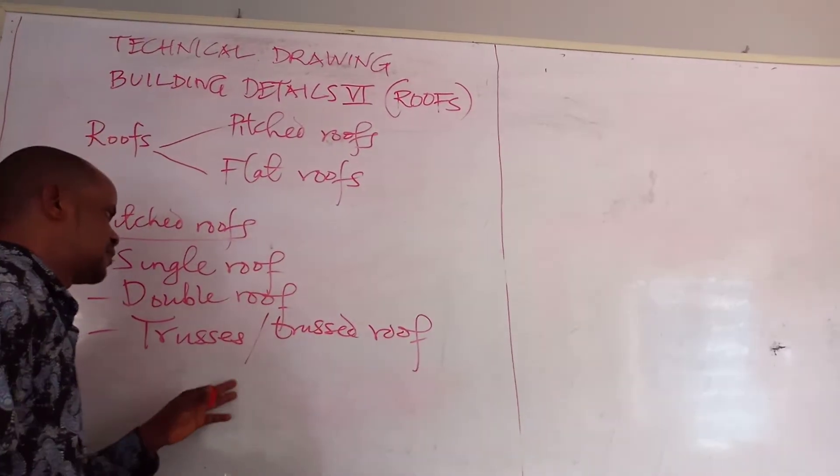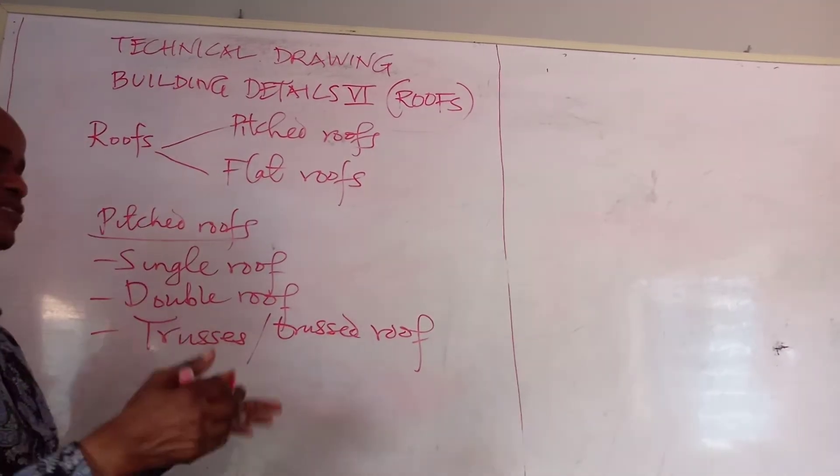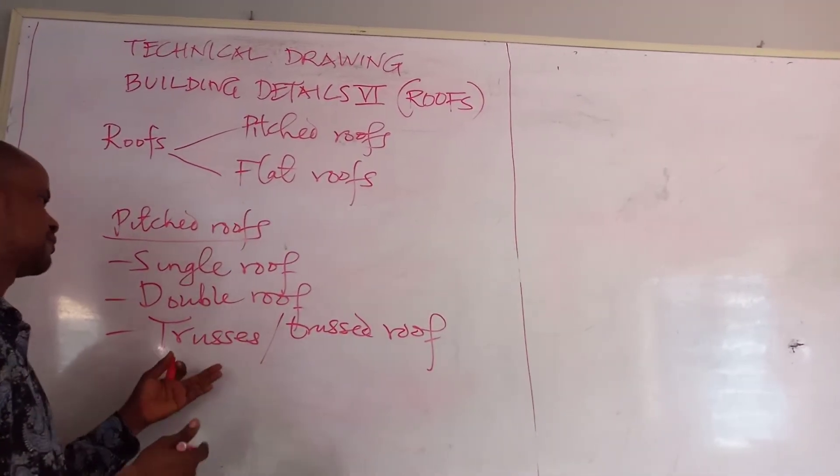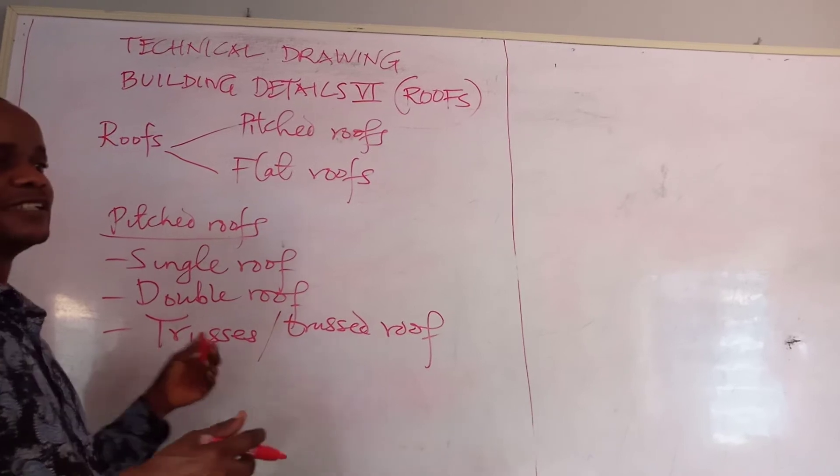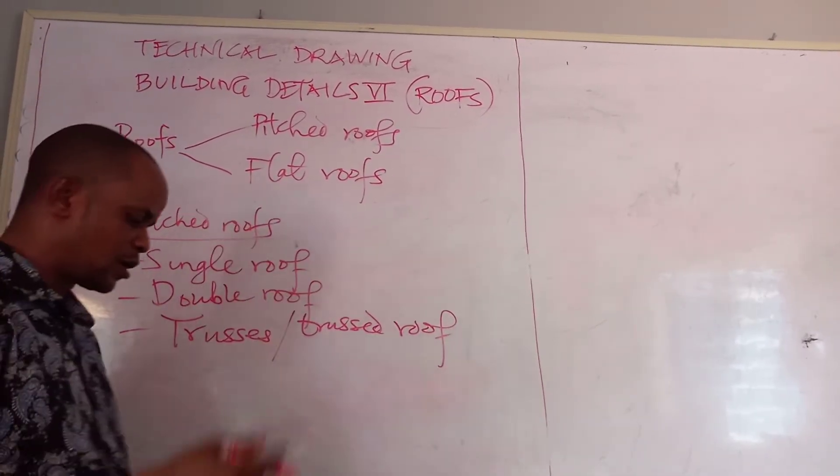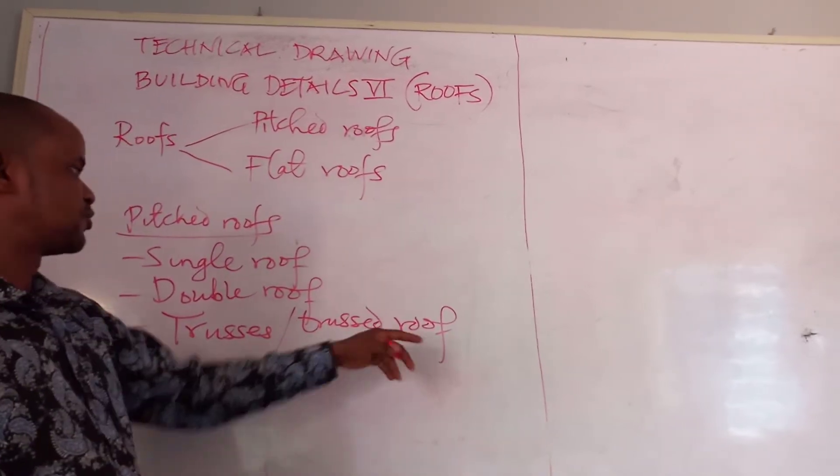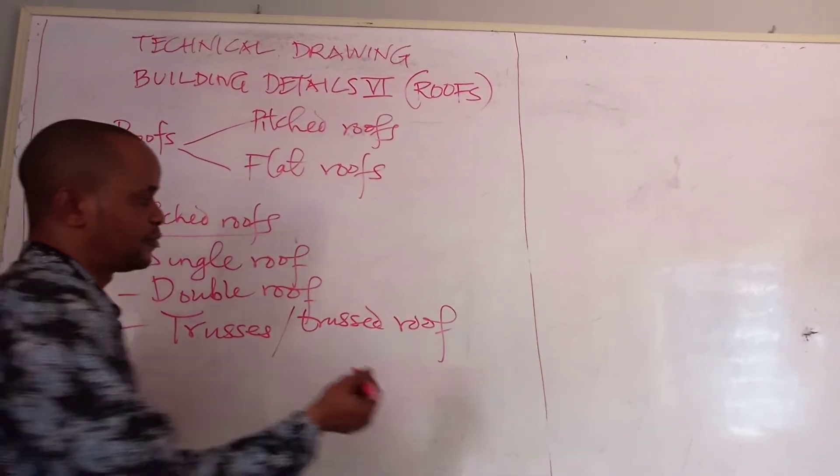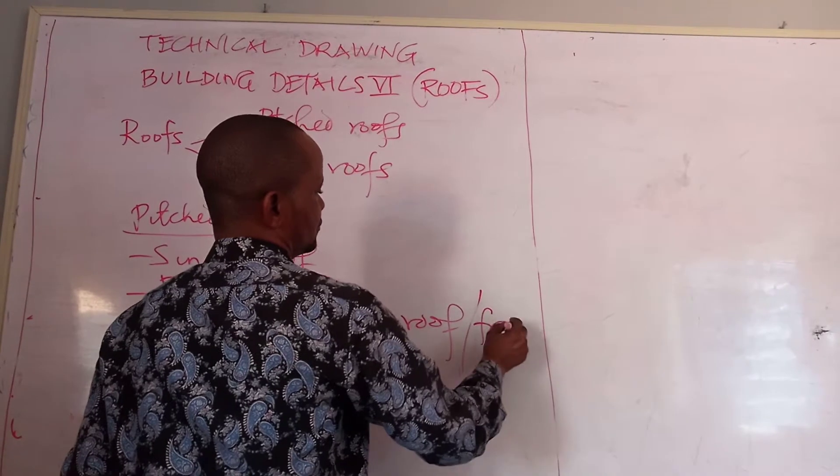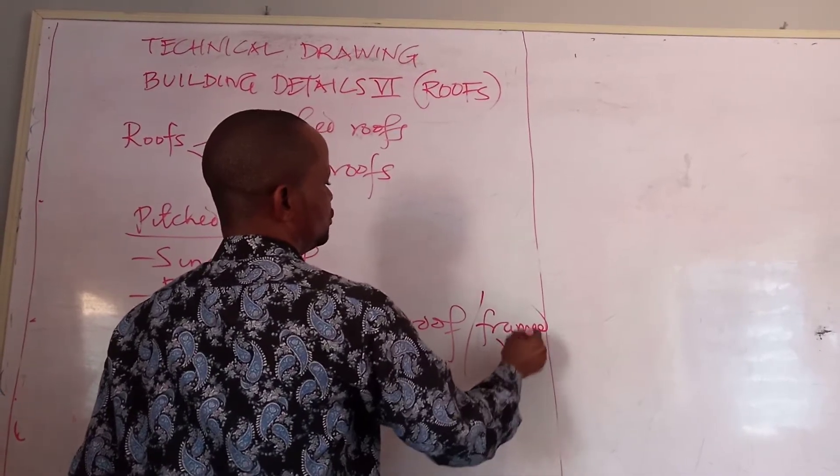Where we have large span of a building to cover, that's when they are coming. And then we have a kind of metal framework. So if you don't call it a truss roof, you can also call them framed roofs.